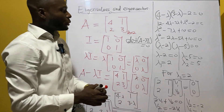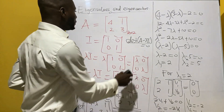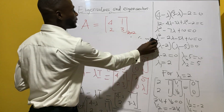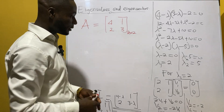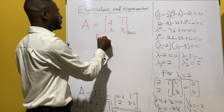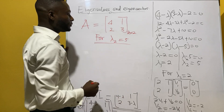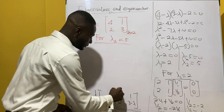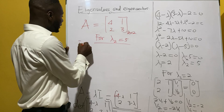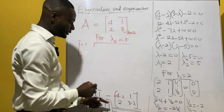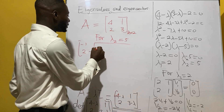Now we pick eigenvalue lambda two which is equal to 5 and work for its eigenvector. Substituting lambda equals 5 into A minus λI, we get [4−5, 1; 2, 3−5] = [−1, 1; 2, −2].